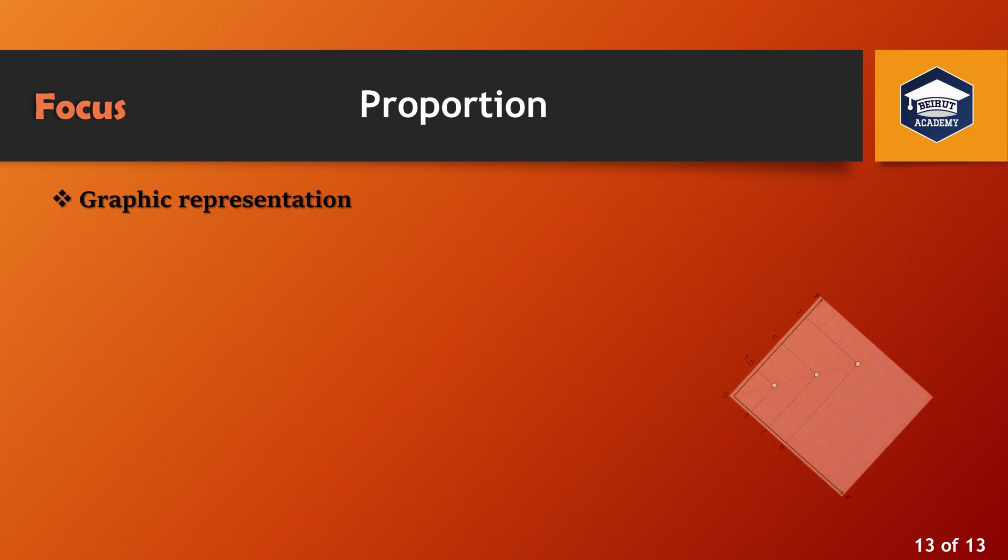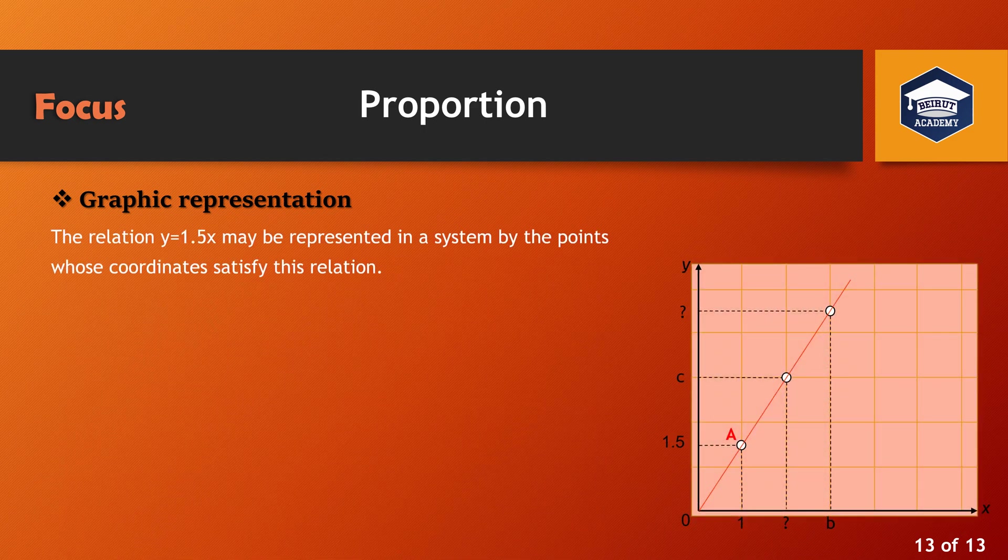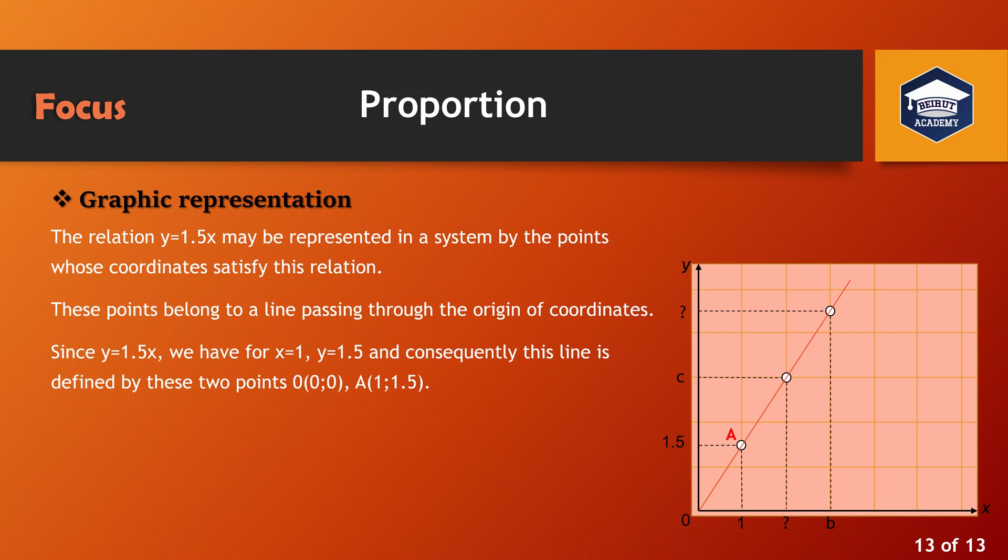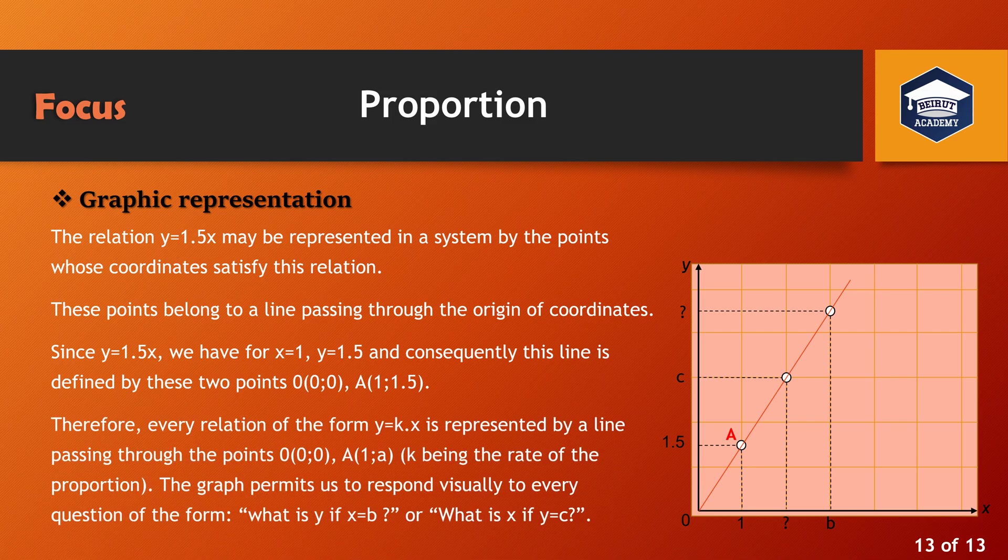Graphic representation. The relation Y equals 1.5 X may be represented in a system by the points whose coordinates satisfy this relation. These points belong to a line passing through the origin of coordinates. Since Y equals 1.5 X, we have for X equals 1, Y equals 1.5, and consequently this line is defined by these two points 0 and A. Therefore, every relation of the form Y equals KX is represented by a line passing through the following points 0 and A, K being the rate of the proportion. The graph permits us to respond visually to every question of the form: what is Y if X equals B, or what is X if Y equals C.